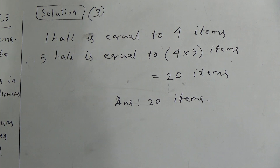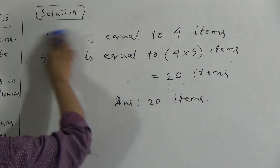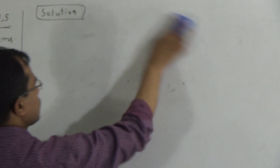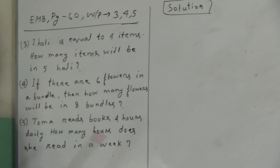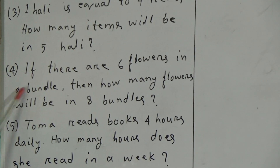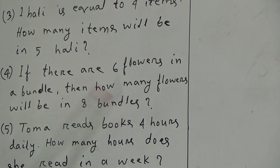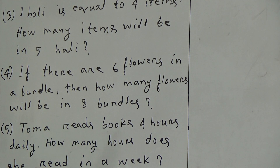Okay, I think we have understood that. Now we will solve question number four. The question is: if there are six flowers in a bundle, then how many flowers will be in eight bundles? In one bundle there are six flowers. In eight bundles, how many flowers exist? We have to find out.